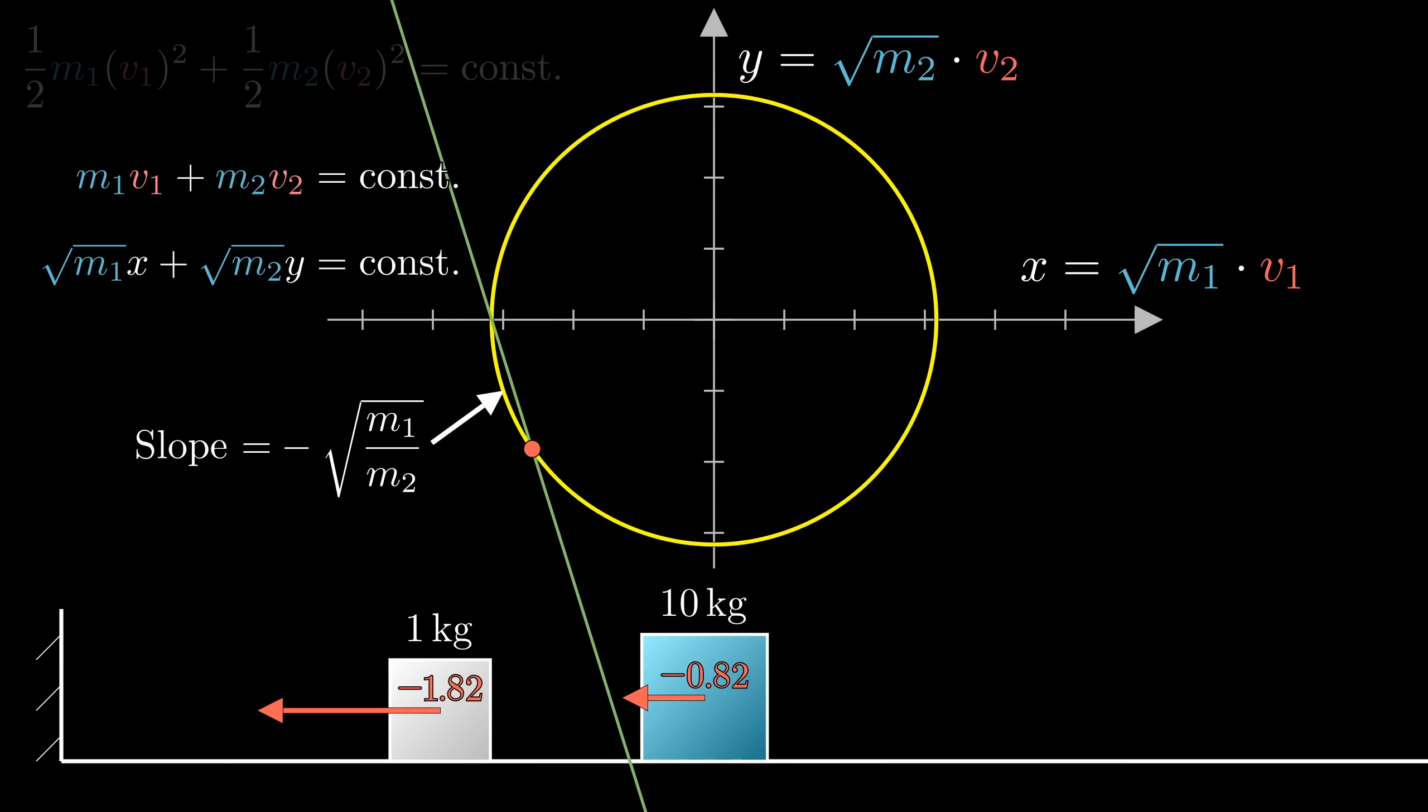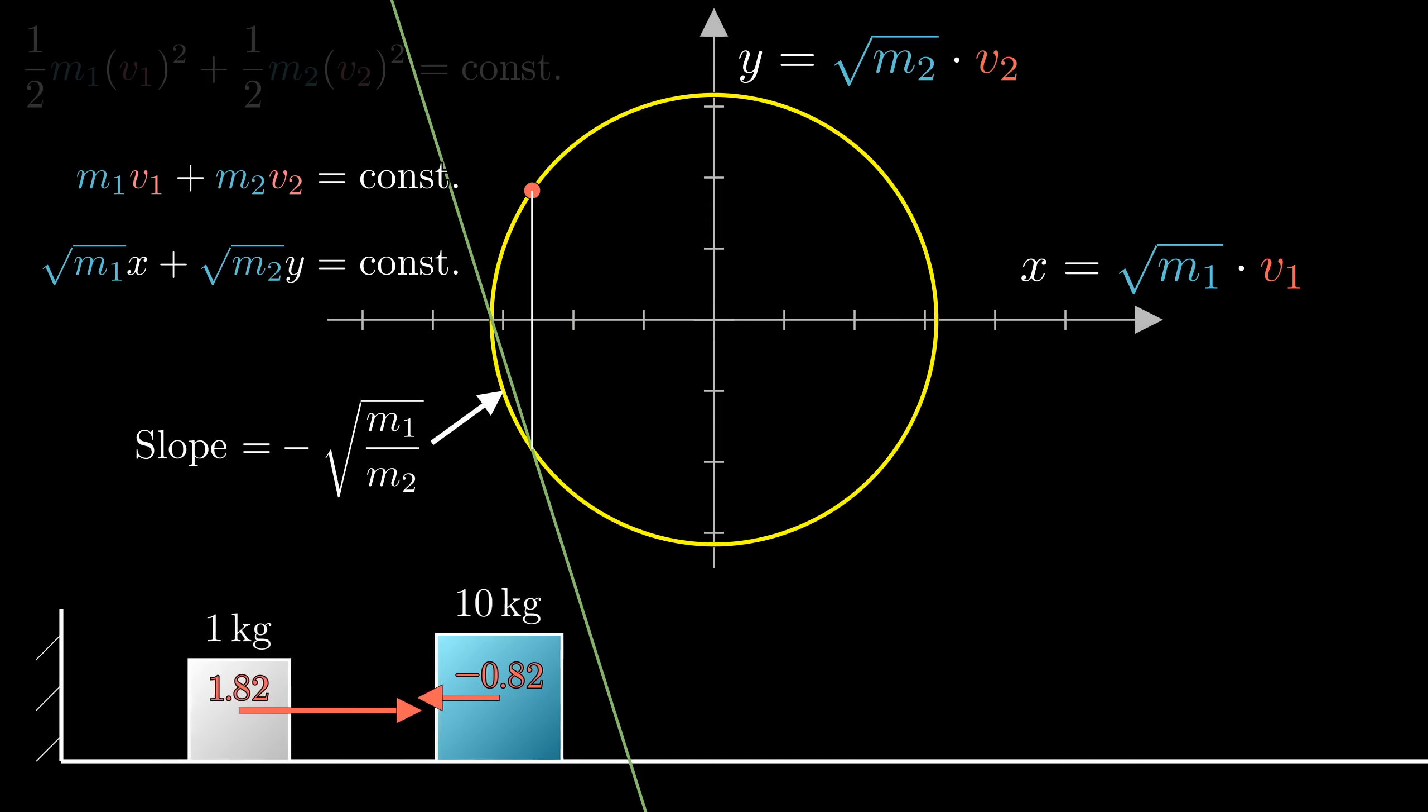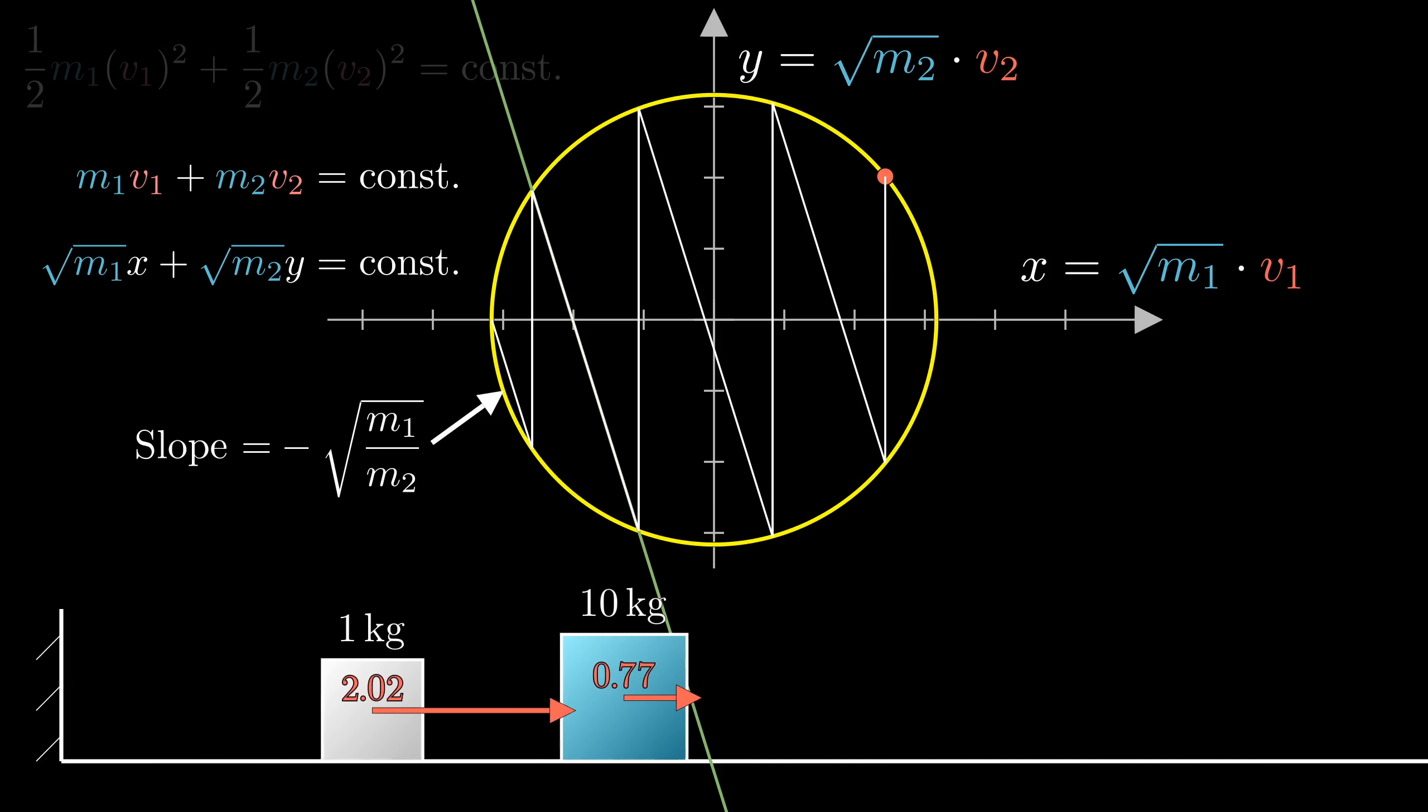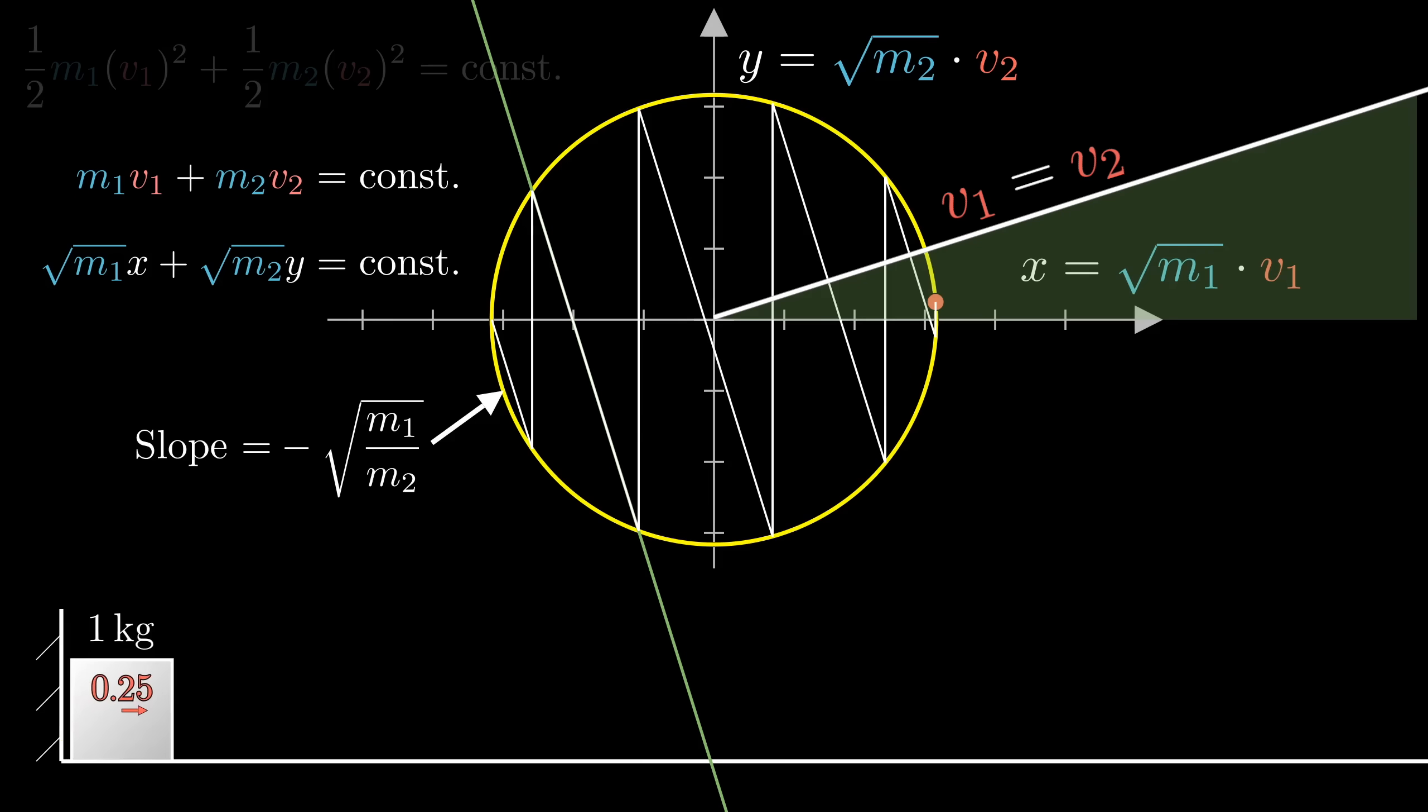From here, it's quite fun to see how things play out. When the second block bounces off the wall, its speed stays the same, but it goes from negative to positive, right? So in this diagram, that corresponds to reflecting about the x-axis, since the y-coordinate gets multiplied by negative one. Then, once more, the next collision corresponds to a jump along a line with slope negative square root of m1 over m2, since staying on such a line is what conservation of momentum looks like in this diagram. And from here, you can fill in the rest for how the block collisions correspond to hopping around the circle in our picture, where we keep going like this until the velocity of that smaller block is both positive and smaller than the velocity of the big one, meaning they'll never touch again. That corresponds to this triangular region in the upper right of the diagram, so in our process, we keep bouncing until we land in that region.